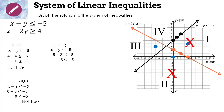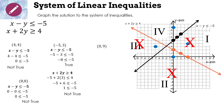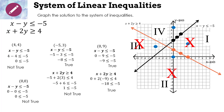But check the second inequality with (−5, 3): −5 + 2(3) = 1 — is 1 ≥ 4? No, not true. So region 3 is not the solution either; by elimination, region 4 must be the answer. Let's verify with (0, 9): first inequality: −9 ≤ −5, true. Second: 0 + 2(9) = 18 ≥ 4, true. Our solution region is region 4.